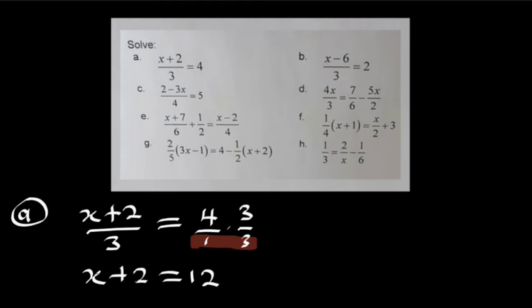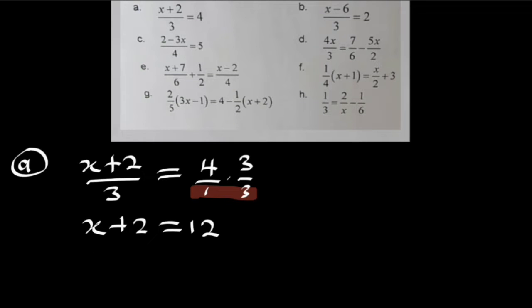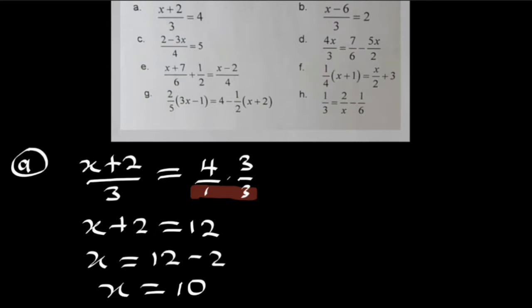So what do we do next? We are going to take this positive 2 and move it to the right, where it becomes negative. So we say x equals 12 minus 2, and finally x equals 10. To confirm, we test it from the left-hand side: if x is 10, then 10 plus 2 is 12, and 12 divided by 3 equals 4. Yes. Therefore, the real value of x is equal to 10.